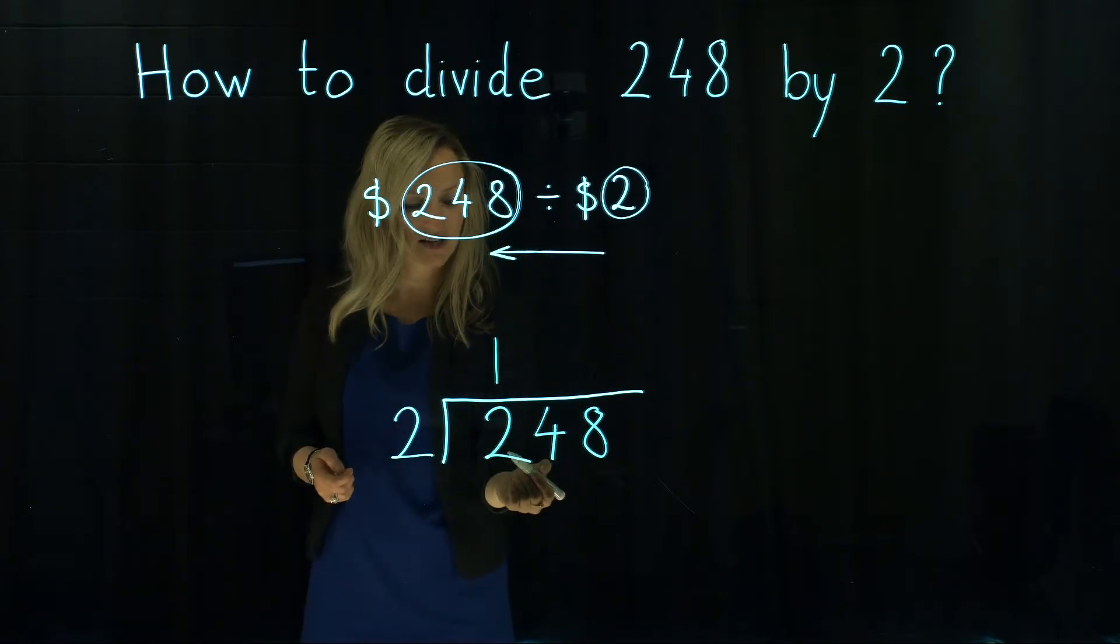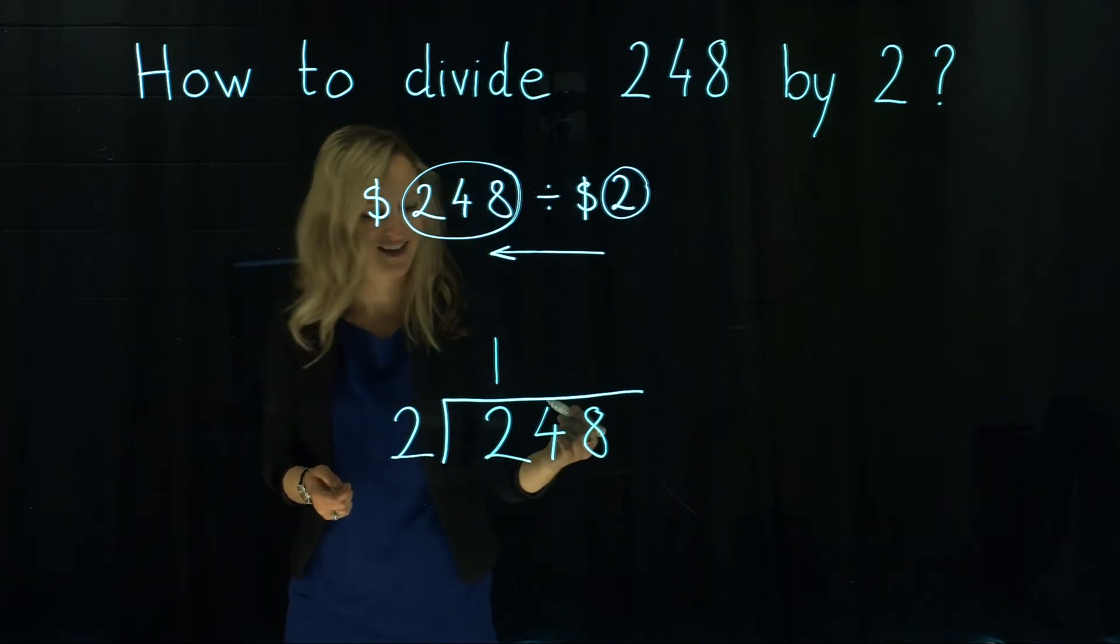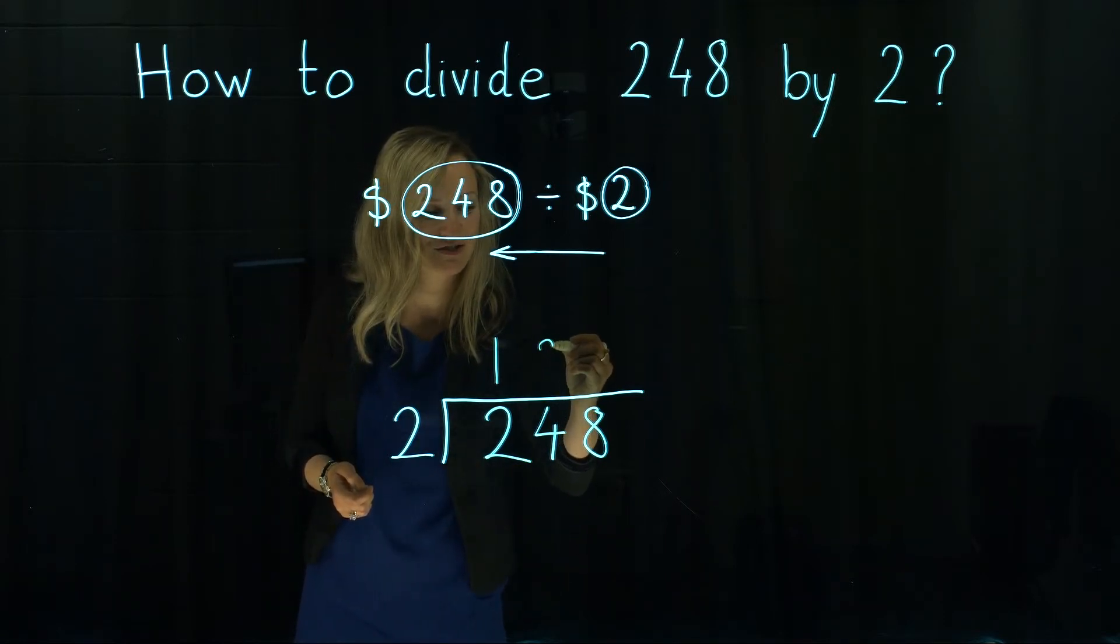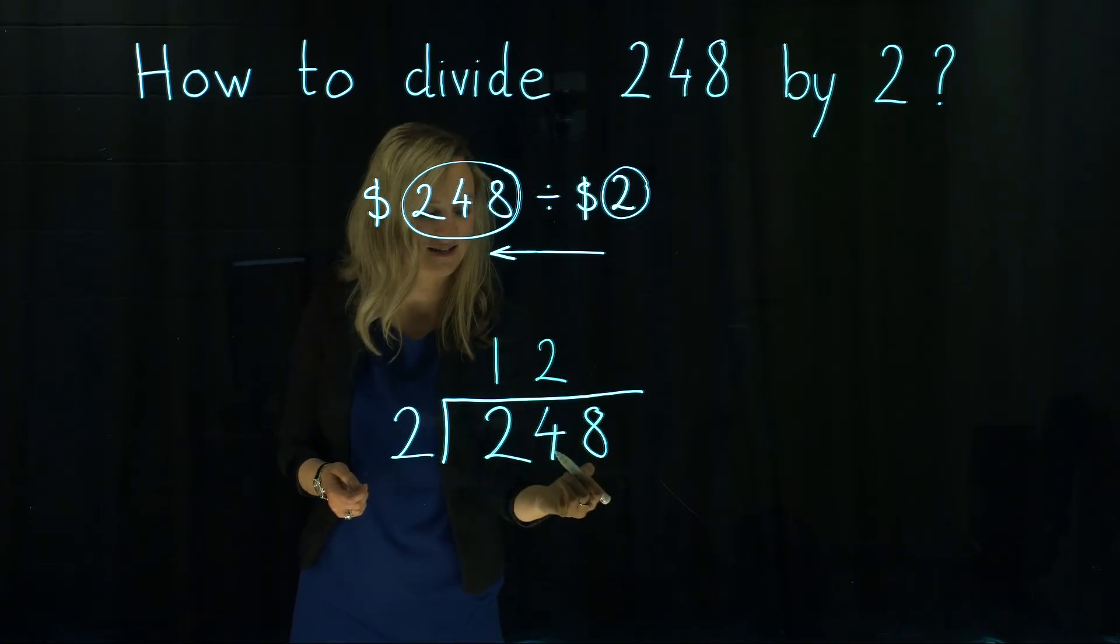Then we continue. Does 2 go into 4? Yes it does. But how many times? It goes 2 times. Because we know that 2 times 2 is exactly 4.